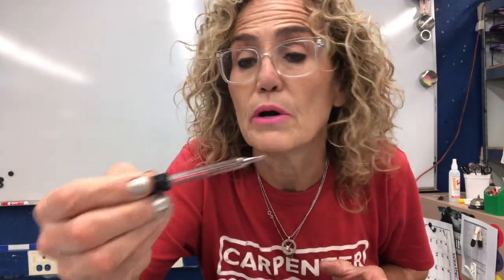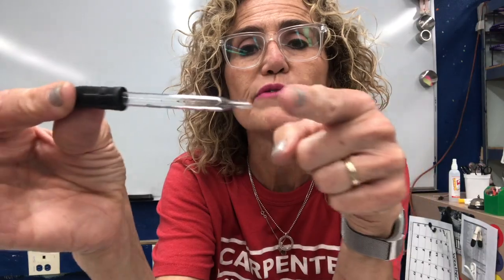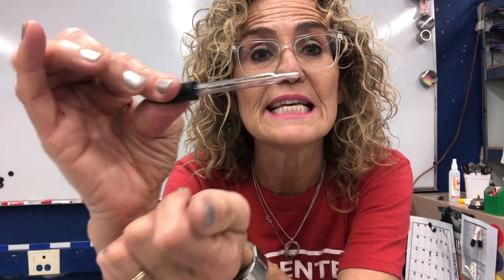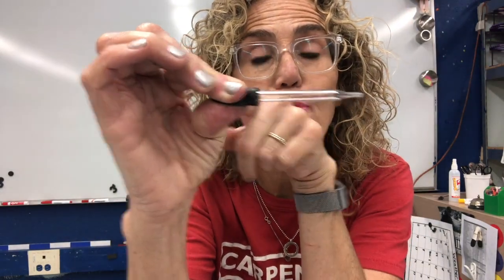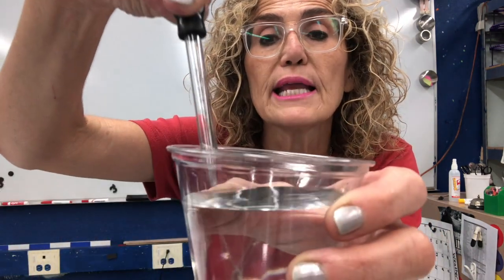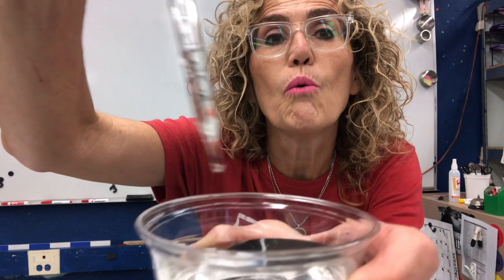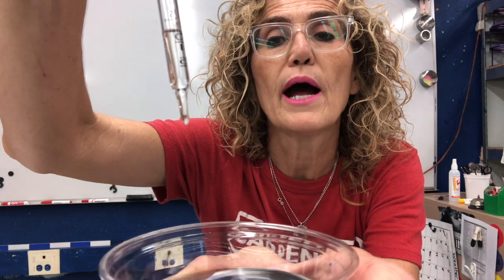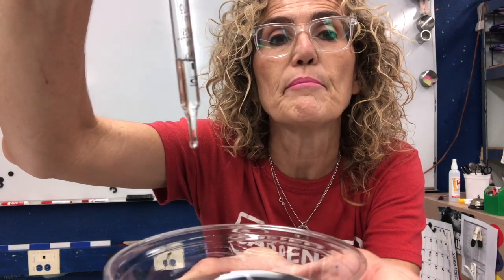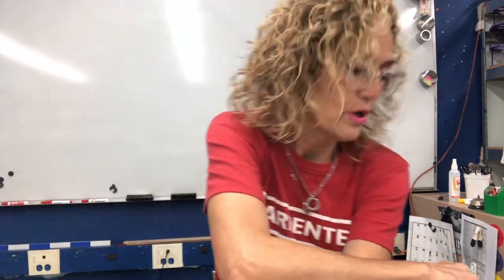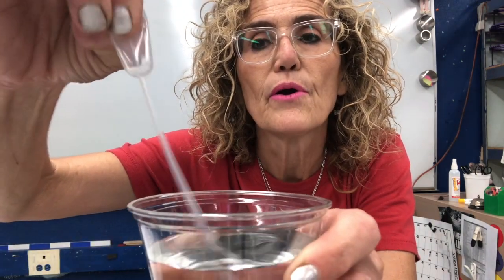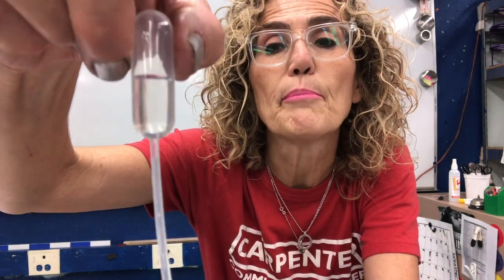The first thing I want to show you is how to use this eyedropper. Right now it is full of air, so I need to squeeze this end to push out some of the air in the bulb. Then if I put it into a cup of water, water goes up into the dropper and I can gently squeeze it to release one drop at a time. You can do the same with the other style — squeeze the end, put the tip in the water, and water comes up into the bulb.